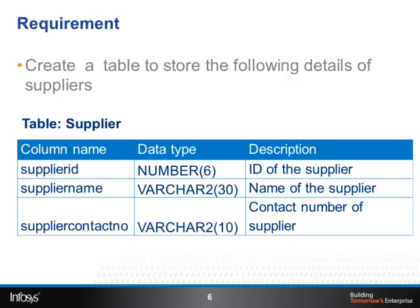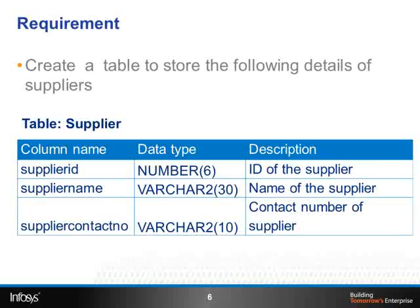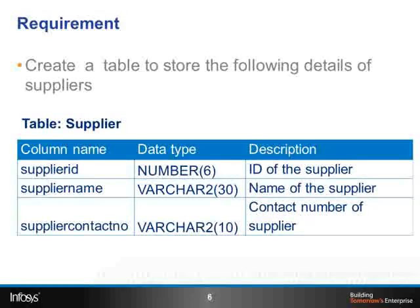Let us consider a requirement wherein the supplier details are to be stored in a table called supplier. The various attributes or columns of the supplier table include supplier ID, supplier name, and supplier contact number. Supplier ID is an integer of six digits, supplier name is a string that can store 30 characters, and supplier contact number is a string of 10 characters.